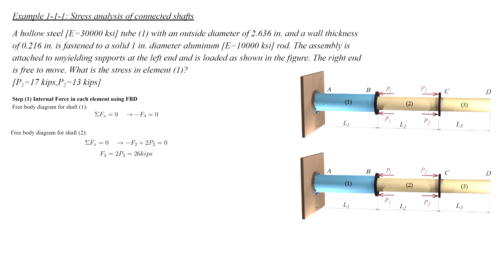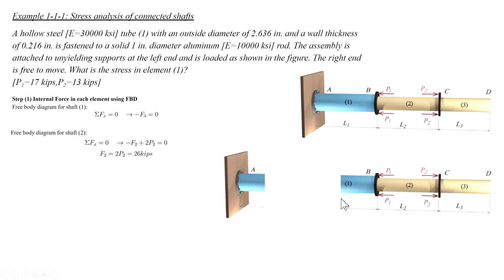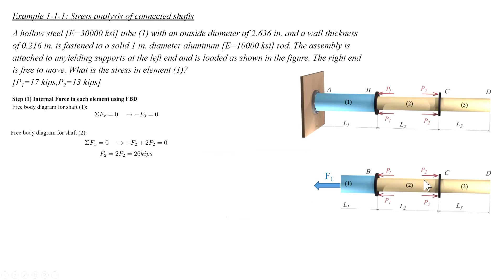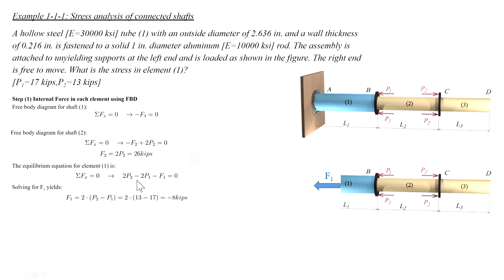Now let's do that for element number 1. We do the same process — cut the element somewhere between A and D, put an unknown force F1 outward from the cut surface, and show all the external forces, which are all four forces in the structure. The sum of forces in the x direction equals 0, giving F1 equal to 2 multiplied by P sub 2 minus 2 multiplied by P sub 1. From this process, we can determine the internal forces in each segment.